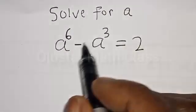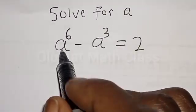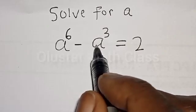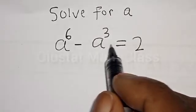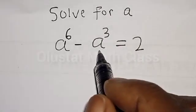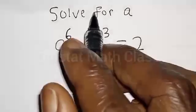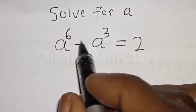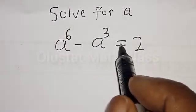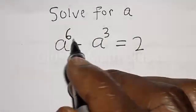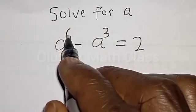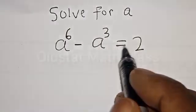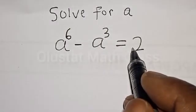Solve for A. A raised to power 6 minus A raised to power 3 is equal to 2. Hi everyone, welcome to my class. In this class, we want to find the value of A from this given equation: A raised to power 6 minus A raised to power 3 is equal to 2.